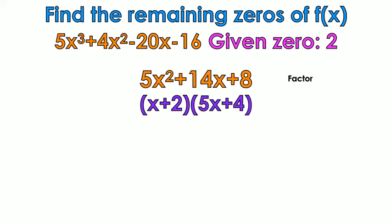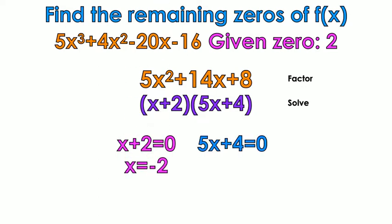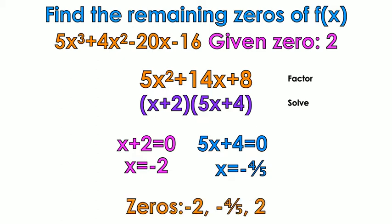If you need to know how to factor, there are some factoring videos on my channel somewhere. So we're going to solve. We're going to set each factor equal to 0. So x plus 2 equals 0. 5x plus 4 equals 0. So x equals negative 2 and x equals negative 4 fifths. So my answers from least to greatest are negative 2, negative 4 fifths, and 2. Those are the zeros of the function.